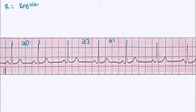If I were to have, let's say, 20 boxes from this R wave to this one, and then 32 from this R wave to this R wave, that would be irregular. But in our strip here, we are regular.